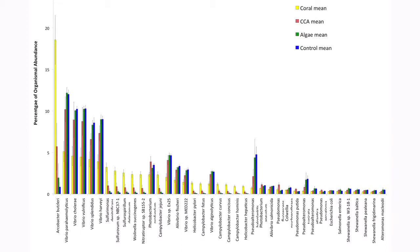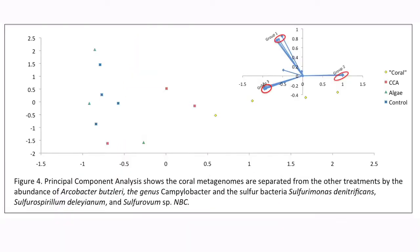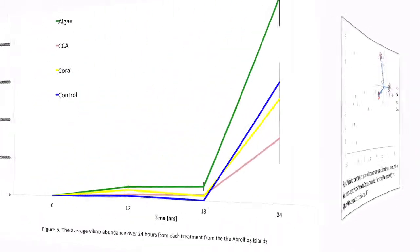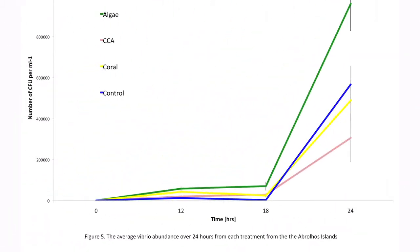The effluents or dissolved content from each of the macroorganisms changed the microbial communities differently. In the coral treatment there was a higher abundance of Arcobacter butzleri, whereas with the algae and control treatments there was a higher abundance of Vibrios. The bacteria that prospered in the coral treatments seemed to be connected with sulfur. We believe the zooxanthellae are releasing a sulfur compound called DMSP, which is getting released into the conical tubes and the sulfur bacteria are consuming it. With the algae, they're releasing more sugar-based products and Vibrios consume those, which is probably why they're more abundant than in the coral or CCA treatment.